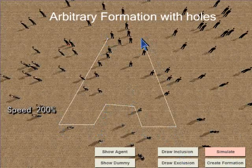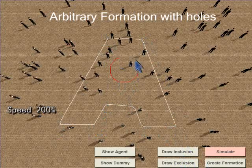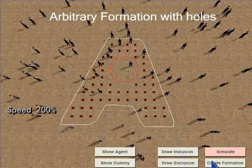To create arbitrary formations, we introduced an extra exclusive boundary to generate holes in the formation, such as the red curve here.